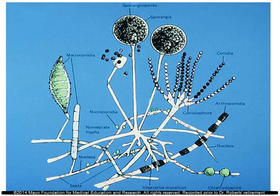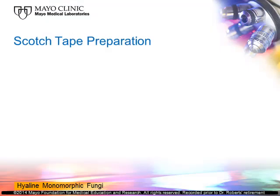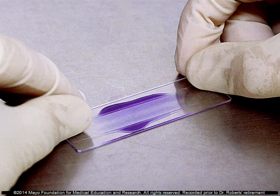The first preparation that can be used in the clinical laboratory, and probably the most widely used, is the scotch tape preparation. Basically, you take a piece of scotch tape, fold it up so the adhesive side is facing downward, touch the colony with that piece of scotch tape, stretch it out, and place it on a slide that has a drop of lactophenol cotton blue on it. The scotch tape will then stick to the slide and allow the fungus to be stained.